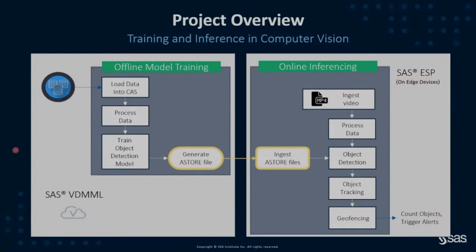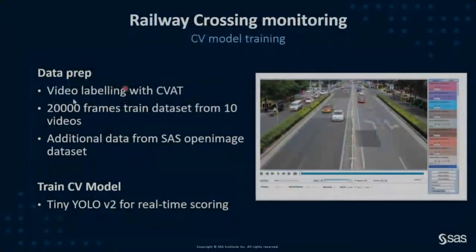The training environment is different from the scoring or inferencing environment. We used a SAS product called SAS ESP — complex event processor — which is able to process many events per second, so we can use the model in streaming as we receive video from the camera. We scored frame-by-frame the video recorded by the camera. This can also be installed directly on the camera itself for live scoring.